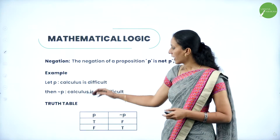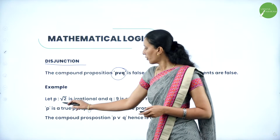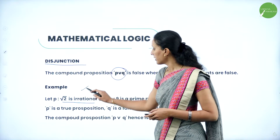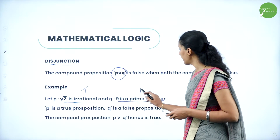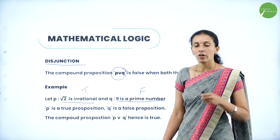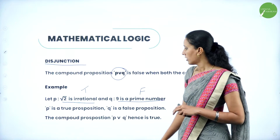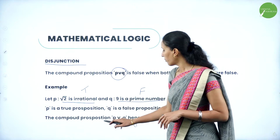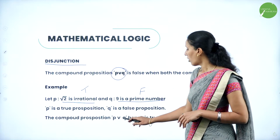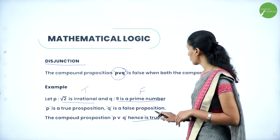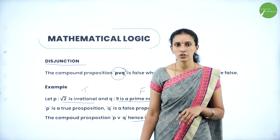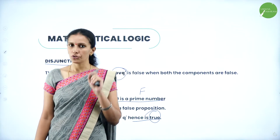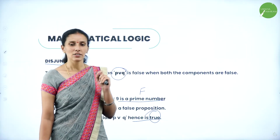For example, take 'root 2 is irrational' (true) and '9 is a prime number' (false). The first statement is true and the second is false. Since P is true and Q is false, the compound proposition P or Q is still true. The disjunction is true whenever any one of the statements is true; otherwise it is false.